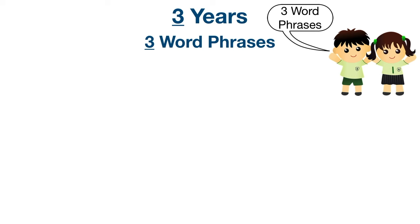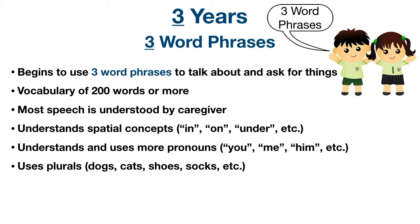Moving on to three years old, similar to two word phrases, we now remember 'three word phrases.' The child begins to use three-word phrases to talk about and ask for things. By age three, vocabulary can be 200 words or more, and not only does vocabulary expand but grammar and pronunciation also improve. Speech becomes clearer, especially to parents. They begin to ask what and where questions, understand spatial concepts like in, on, or under, concepts involving colors and time, and begin using pronouns like you, me, him, or her, as well as plurals like cats, dogs, shoes, and socks.